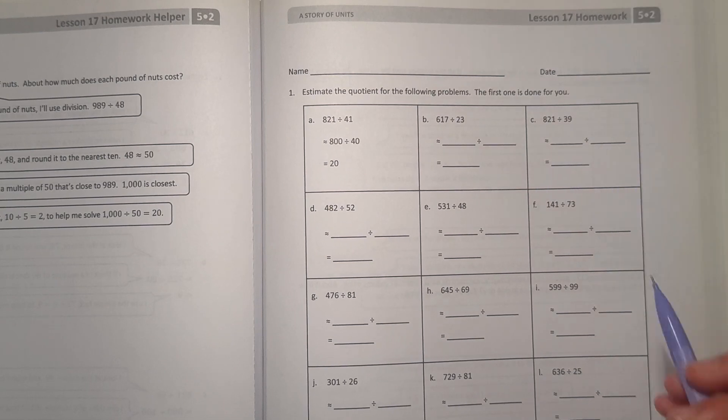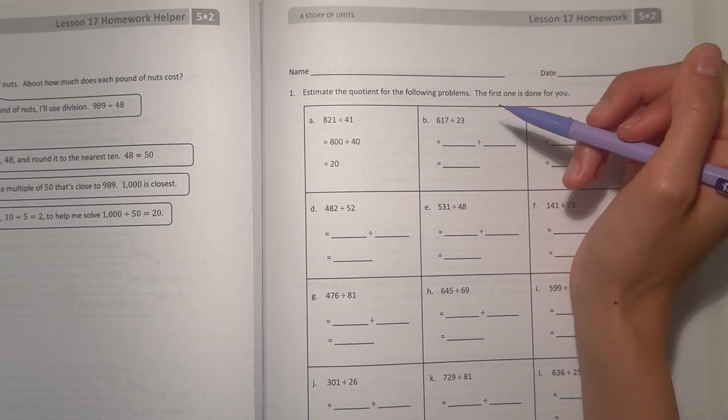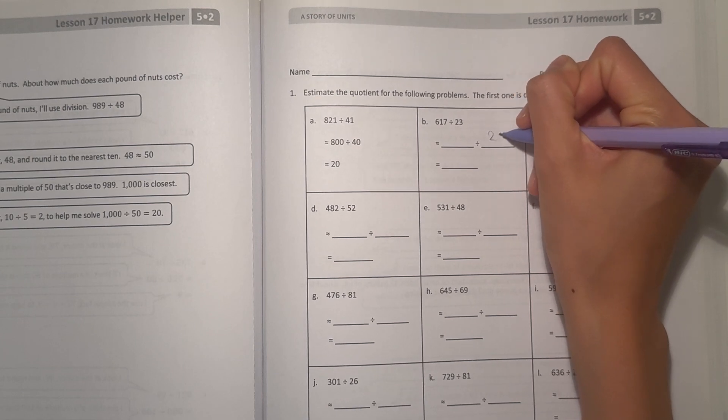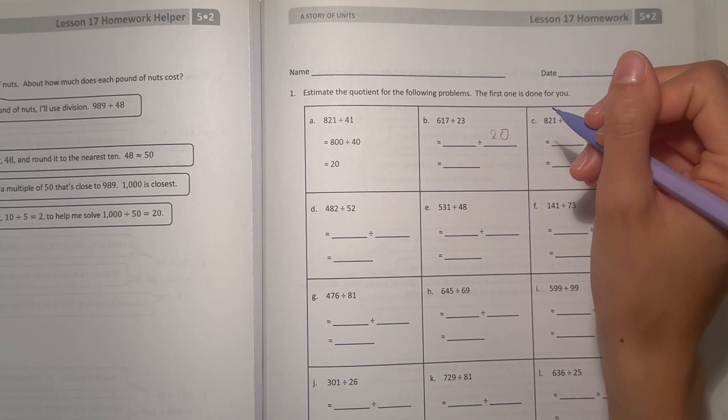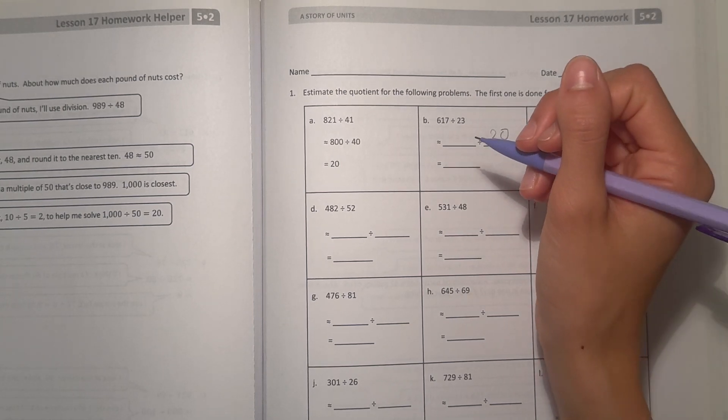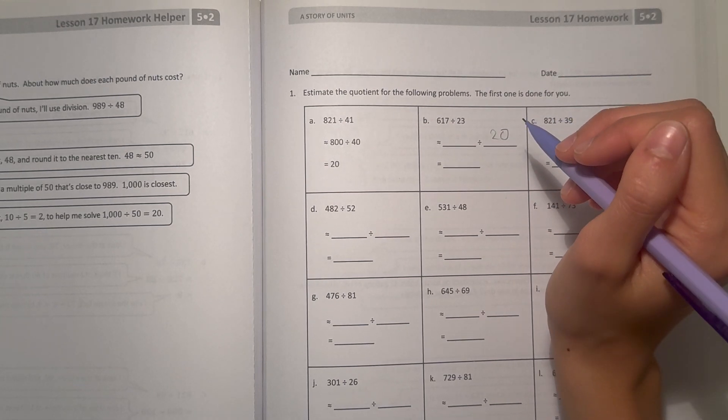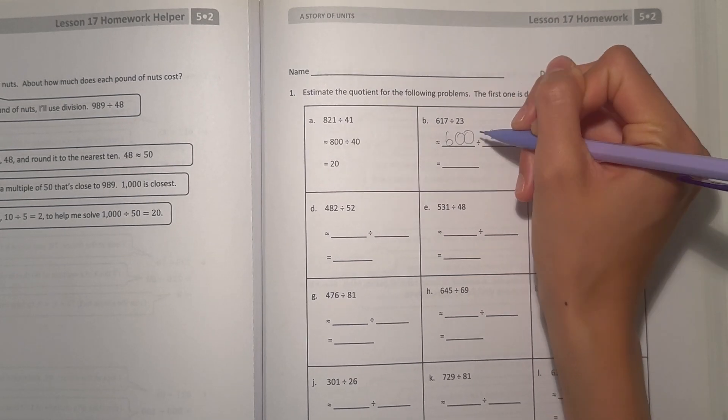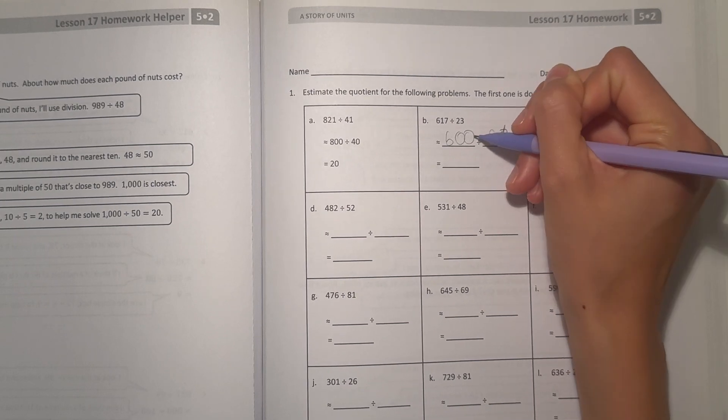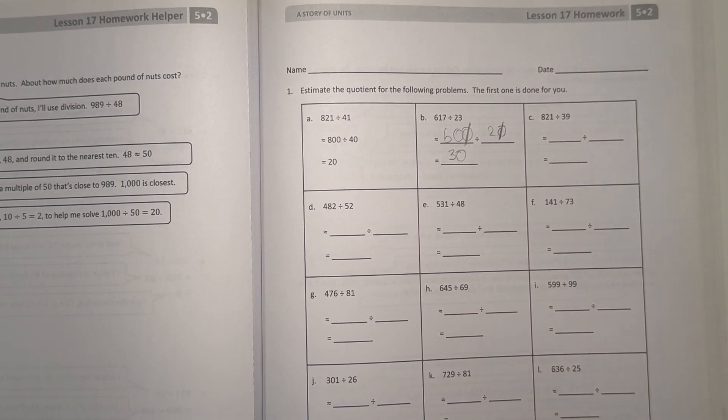So let's take a look at B. First thing we should do is round the divisor, which is 23, and 23 can round to 20. Then we look at our dividend, which is 617, and we want to round to a number close to 617 that can go easily into 20. So 600 divided by 20, cross out the zeros, we have 60 divided by 2, which is 30.